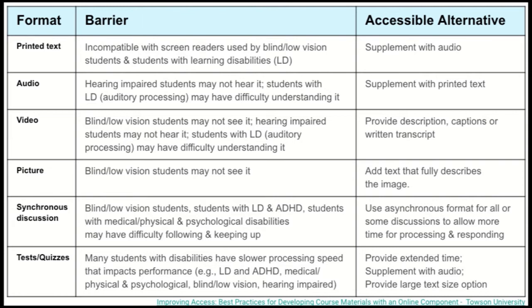If you have video, you might have somebody who is blind or has low vision and won't be able to see that video. Hearing-impaired students cannot hear it, and students who have learning disabilities may have difficulty understanding a video. Accessible alternatives include providing descriptions, captions, written transcripts, and describing the visuals shown in that video. If you have pictures, blind or low vision students can't see those pictures. If you add text that fully describes what's in that image, that will help your learners participate whether or not they can see the picture.